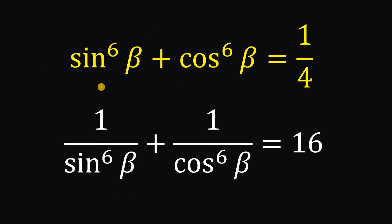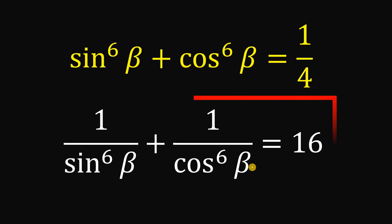Therefore, given sine raised to the power of 6 of beta plus cosine raised to the power of 6 of beta equals 1 fourth, the value of 1 over sine raised to the power of 6 of beta plus 1 over cosine raised to the power of 6 of beta is simply equal to 16. And as always, we are done.